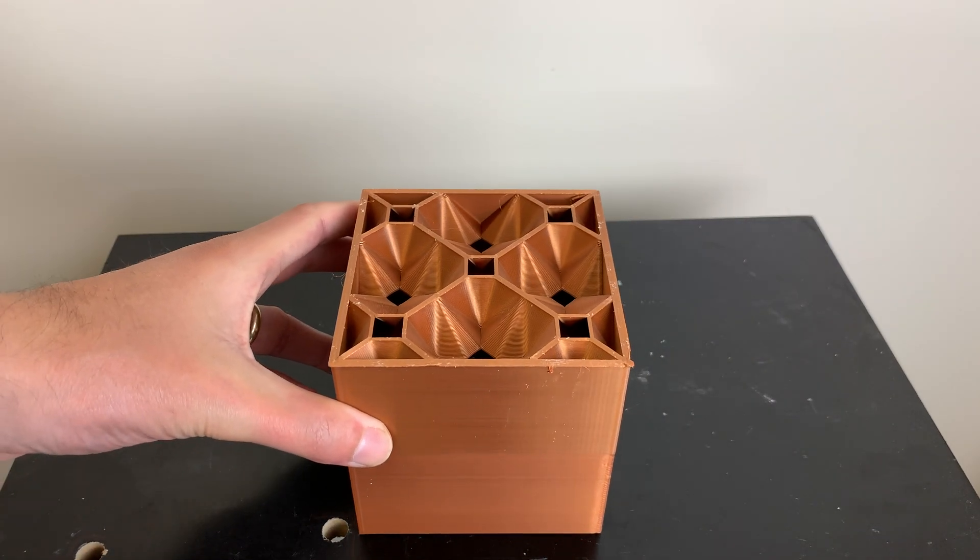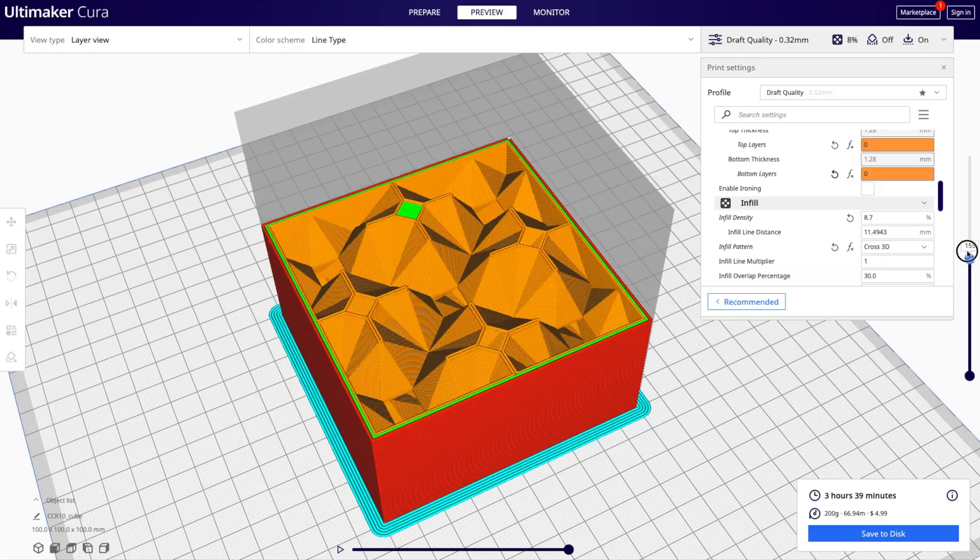Next we have kind of a weird one. It's called 3D cross. I'm not really sure how to describe this one.